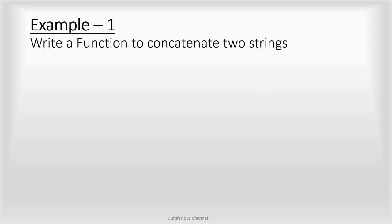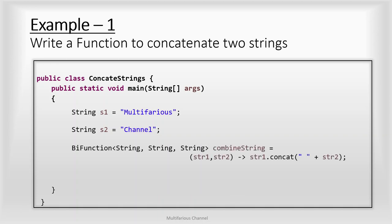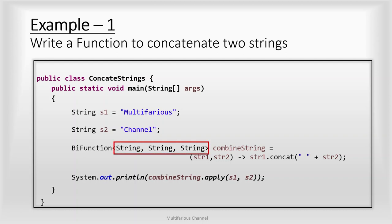Suppose we want to write a BiFunction that takes two strings as input and returns a single string obtained by concatenating the two input strings. Here we have a class ConcatenateStrings with a main method where we have defined two strings, s1 and s2. We write a BiFunction of String, String, and String named combineString that takes str1 and str2 and returns str1 concatenated with str2. Notice that the input types are both String and the return type is also String — all types are the same. In such cases, we should not use BiFunction; instead we should use BinaryOperator.